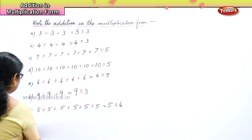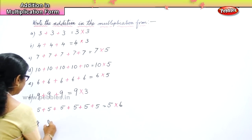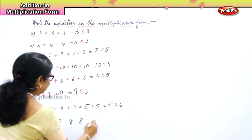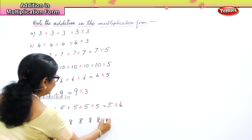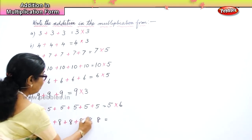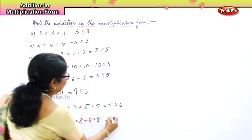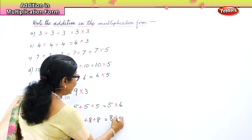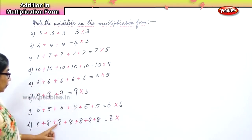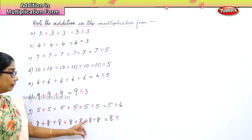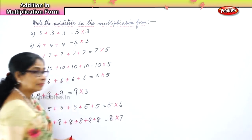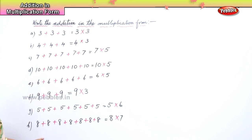Now let's take number 8: 8 plus 8 plus 8 plus 8 plus 8 plus 8 plus 8. Let's see how many times. You put number 8, then write how many times: 1, 2, 3, 4, 5, 6, 7. So 8, 7 times.